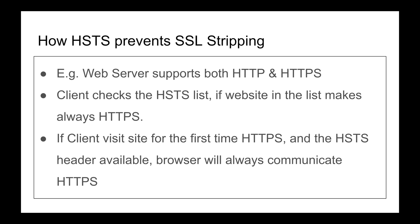If the user just types google.com and hits enter without specifying a protocol, the browser checks the HSTS list. If google.com is on the list, the browser will always communicate over HTTPS — performing the TLS 1.3 handshake with ephemeral Diffie-Hellman and so on. But if you're visiting husseinbanking.com for the first time and it's not in the list, the browser doesn't know, and it defaults to HTTP.